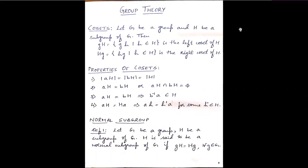Let us look at the first definition: cosets. Let G be a group and H be a subgroup of G. Then gH is the left coset of H, where gH is obtained by multiplying g into H using the star operation, which depends on the operation over the group G. Similarly, Hg is the right coset of H, given by H star g, and these cosets form a partition of the group G.